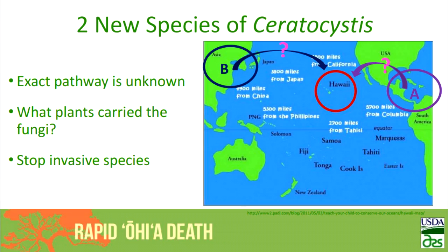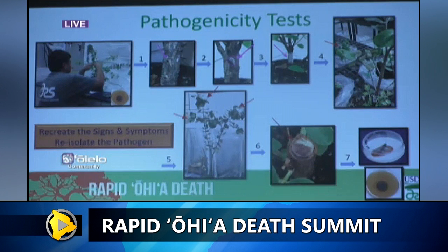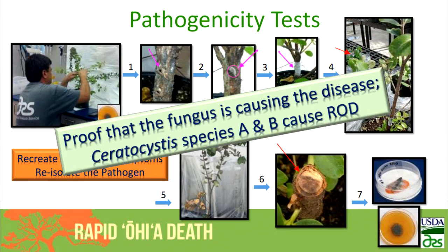Once you understand the symptoms and always find these fungi, you have to go about specific steps to actually prove that the fungus is causing the disease. You do that in the laboratory — starting with a pure culture of the fungus growing on a plate. You take healthy seedlings, wound them, and follow the stepwise progression. When you look inside, you see that typical discoloration, and you can re-isolate the pathogen. This proves pathogenicity — that these two Ceratocystis species, called A and B in our lab, are causing rapid Ohia death.